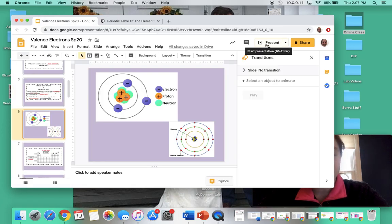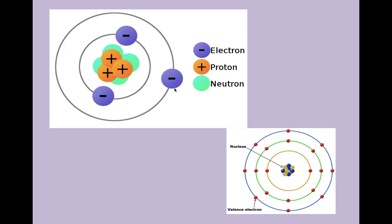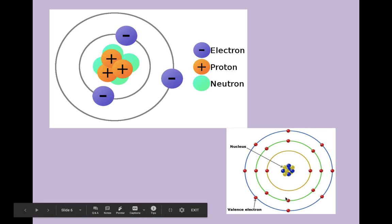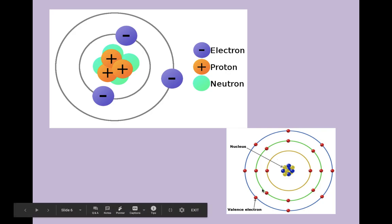When we are looking at valence electrons, the valence electrons are in the outermost shell. Here we can see that there are three electrons, but this Bohr model only has one because it is in the outermost shell. Down here, we can see that there are many electrons, but the valence electrons are only in the outermost shell. One, two, three, four, five, six, seven, eight. That's how you can find it on a Bohr model. You can look at the outermost shell.